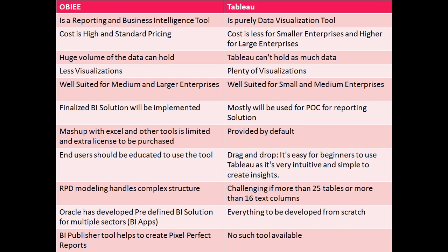OBAE supports a robust model using the RPD concept, where you can configure your entire data warehousing model in a single RPD file and handle huge volumes of data. Tableau has some limitations — it can't handle more than a certain number of tables and columns. Tableau is mostly used for visualization, where users may not require more rows, which can be an added advantage.